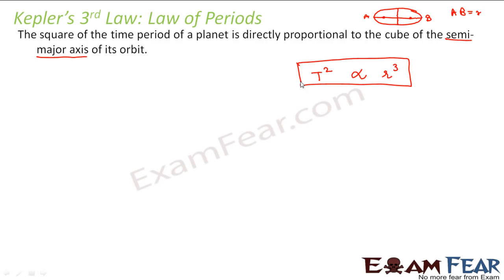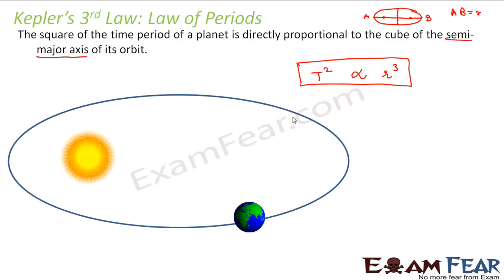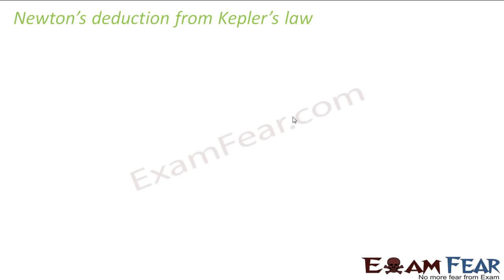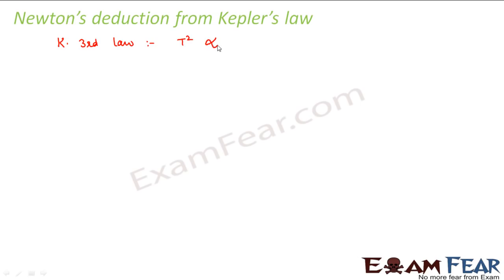Kepler's three laws were very famous and accepted by everyone. Based on Kepler's third law — the law of periods — Newton got the idea that force is inversely proportional to the square of the distance between objects. Let us now look at Newton's deduction from Kepler's law. According to Kepler's third law, T² ∝ R³, which means R³/T² is constant.